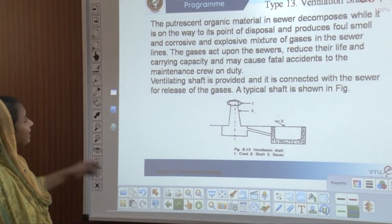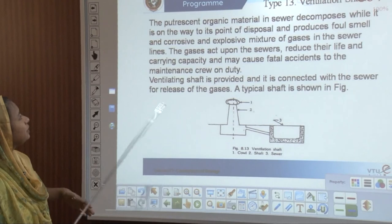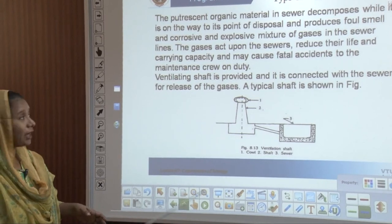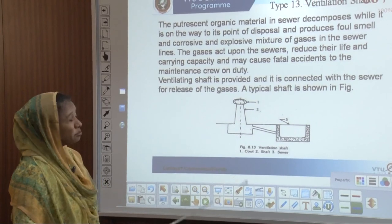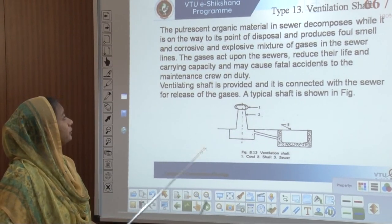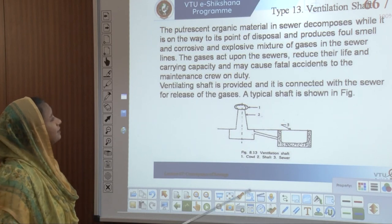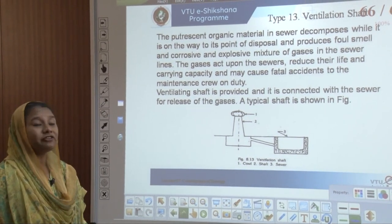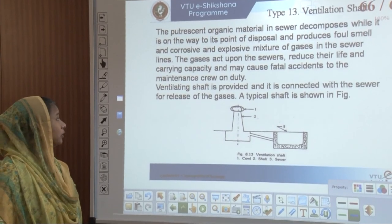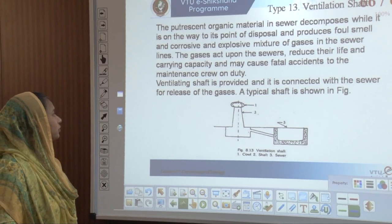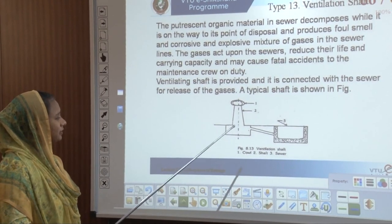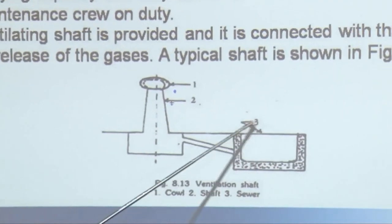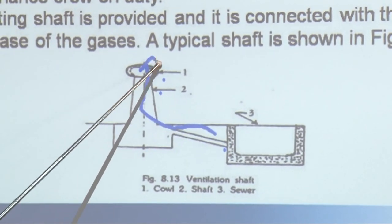Ventilation shafts are provided because the decomposition of putrescent organic material at the point of disposal produces foul smell and corrosive and explosive mixtures of gases. These gases act upon the sewers, reducing the life of pipelines and carrying capacity, and might even cause fatal accidents to the maintenance crew. A ventilating shaft is therefore connected with the sewers for release of gases. A typical shaft has a cowl, a shaft, and a sewer — every sewer should have this kind of ventilation shaft.